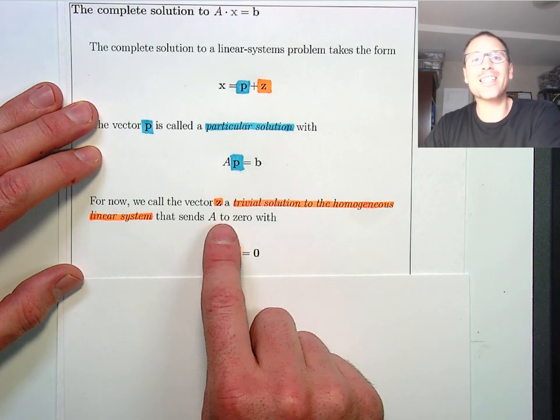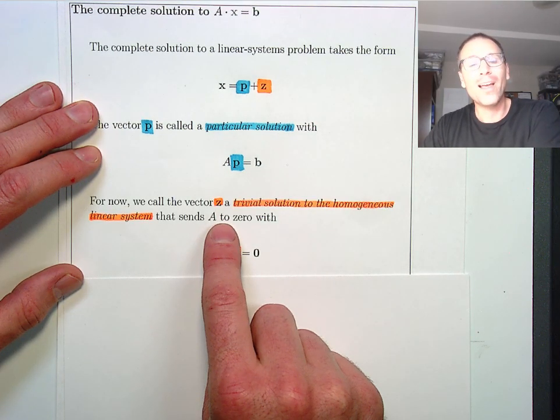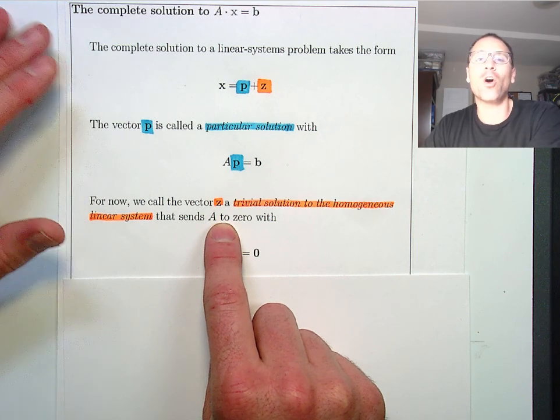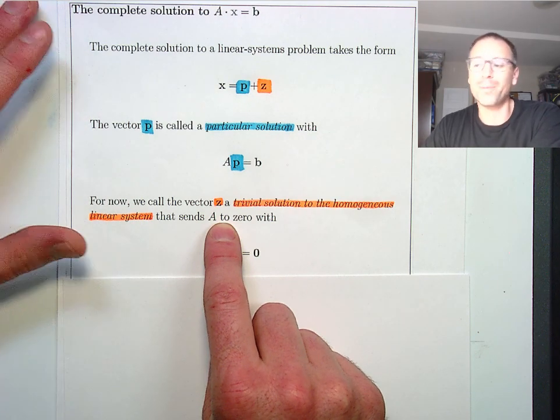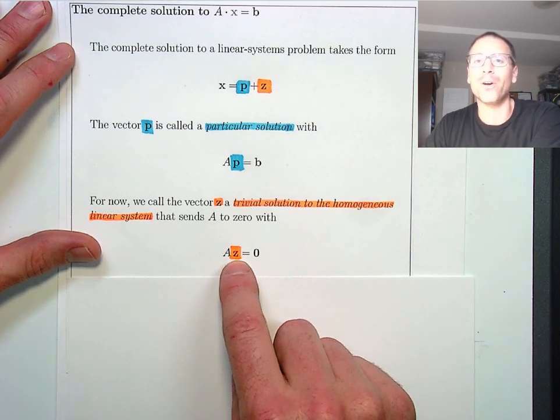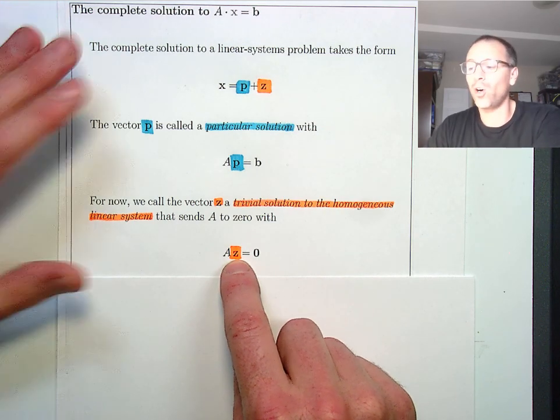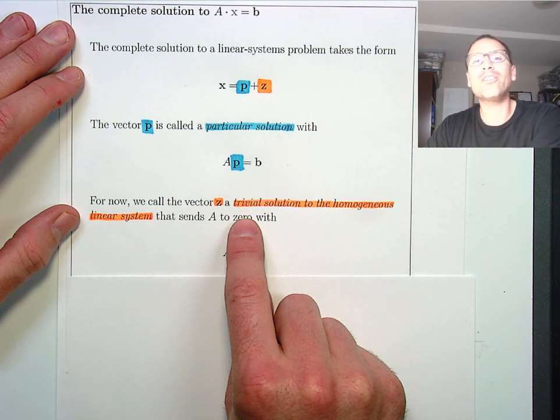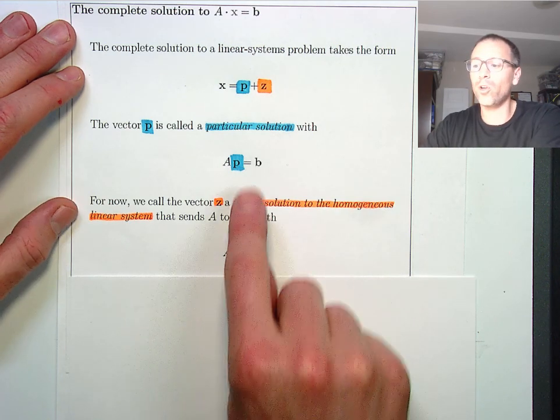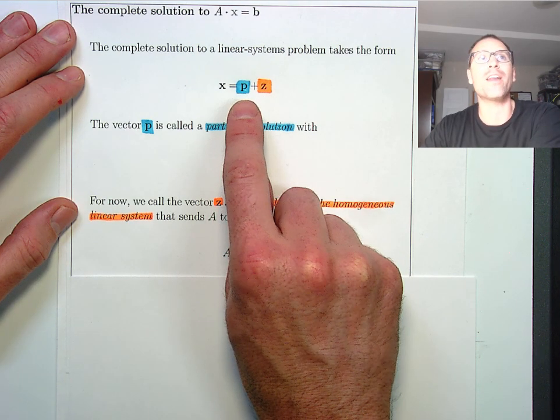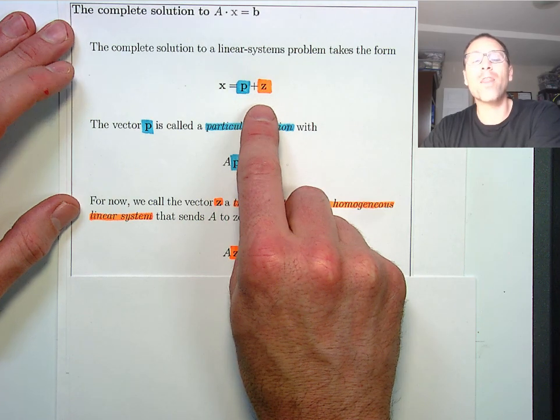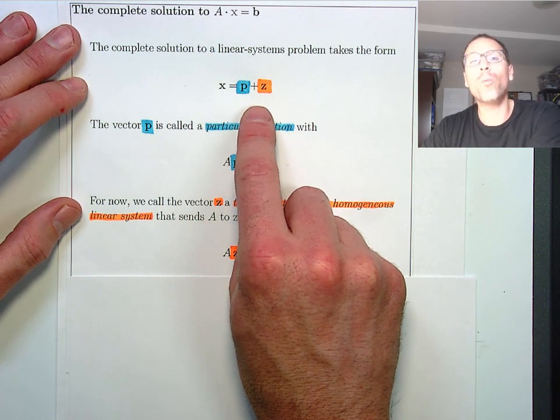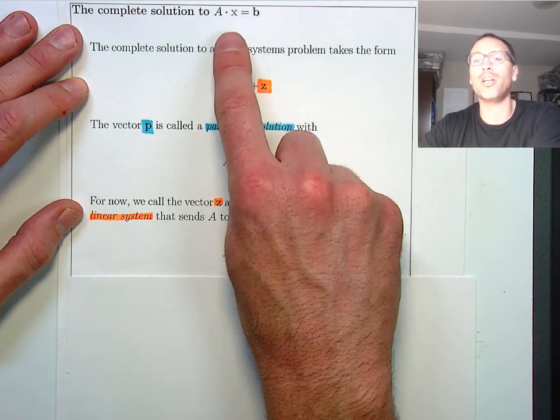Thus, we need to track vectors that send the matrix to zero. Mathematicians can't help themselves. They can't call those zero vectors because formally speaking, they don't have to be zero. So they introduced this notation called z, the trivial solution to the homogeneous linear system. So when you're looking at a complete solution, we say that it's a particular solution plus the trivial solution to the homogeneous linear system problem associated with the matrix A.